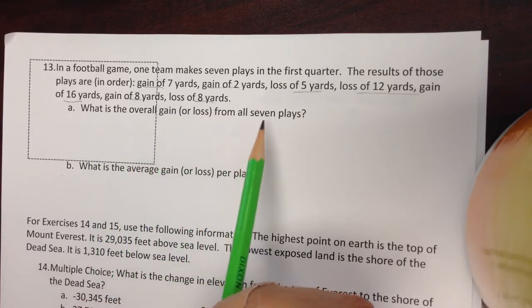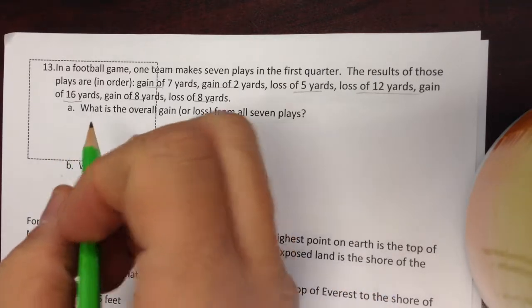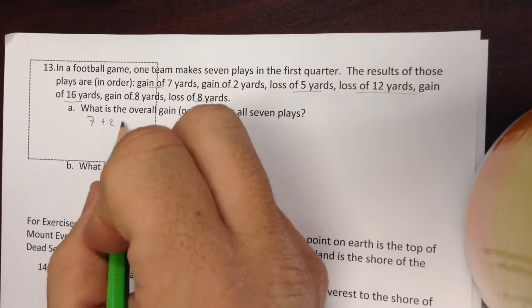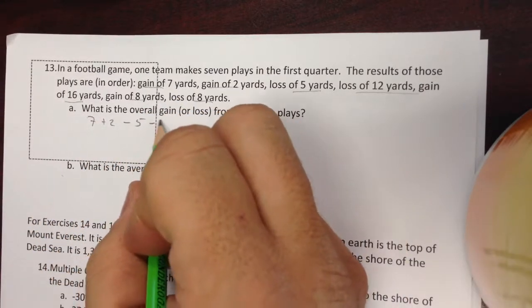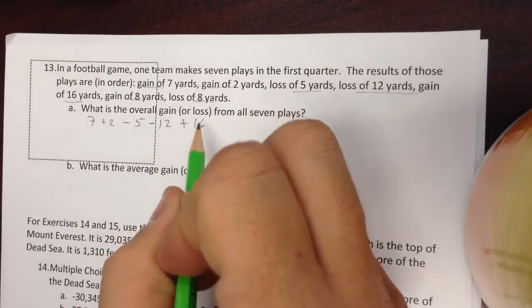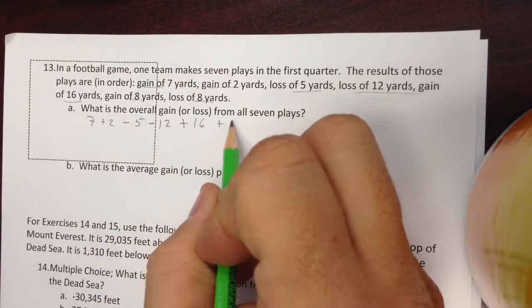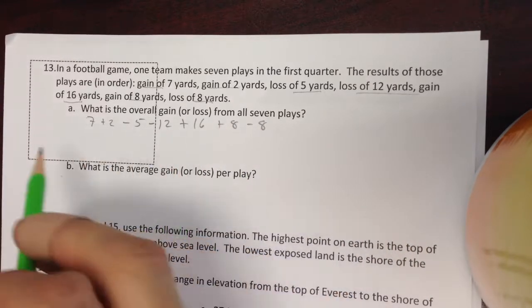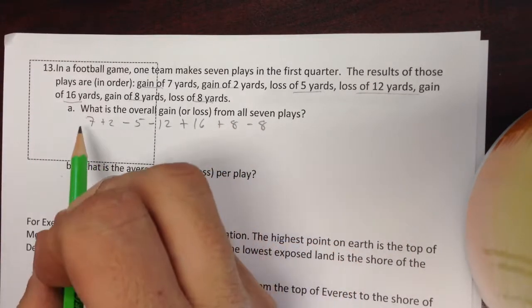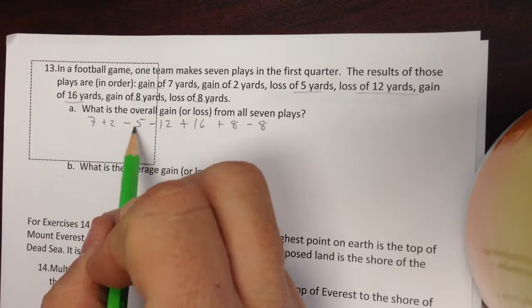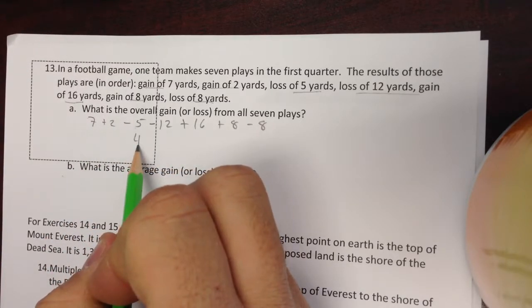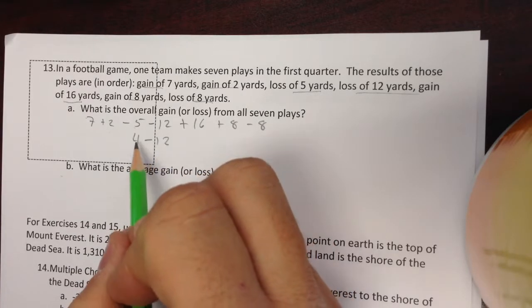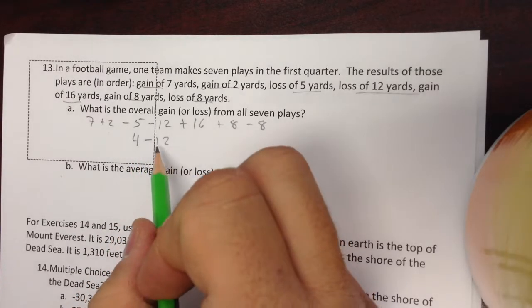So what is the overall gain or loss of these seven plays? That's like taking 7 plus 2 minus 5 minus 12 plus 16 plus 8 minus 8. Now I can put these together however I like, but I'm just going to go in order. I'm going to have 9 minus 5 is 4. 4 minus 12 is negative 8.